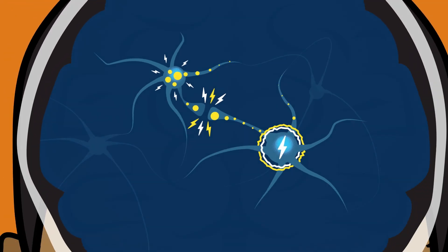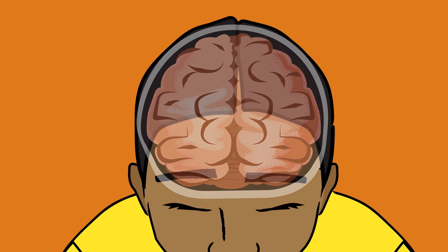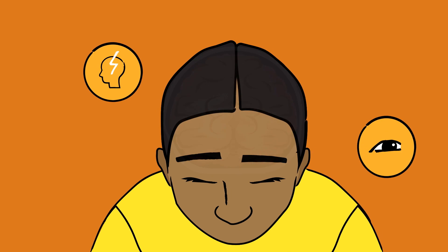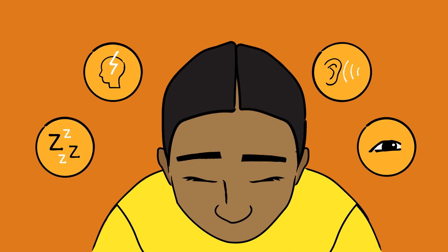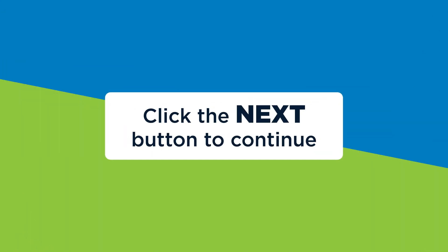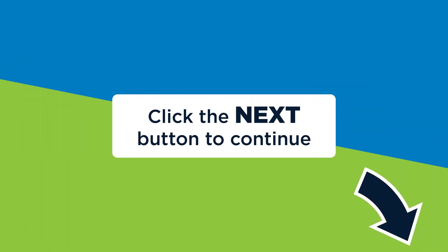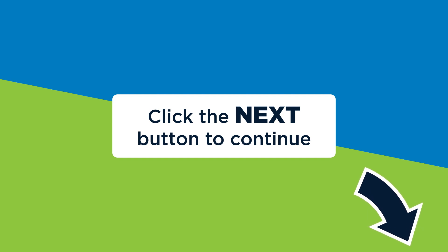These changes in the brain can show up as the signs and symptoms we associate with a concussion. Four icons appear around the brain: a lightning bolt over a head, several z's in a bubble, sound waves beside an ear, and a squinting eye.